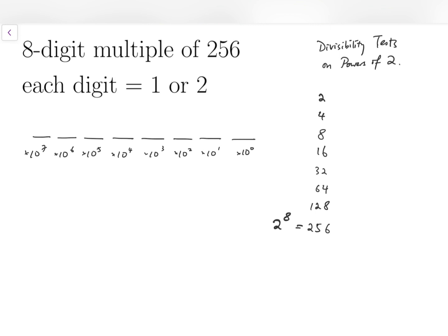The first test is easy—whether a number is a multiple of 2 just means it's an even number. So the units digit must be 2. This is obvious.